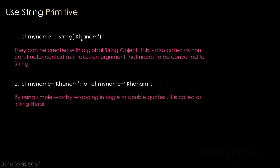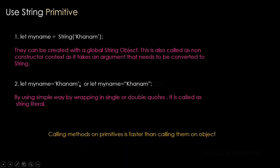There are two ways of creating string primitives — using the String global object or using single/double quotes — but the most preferred is using single or double quotes directly. The reason to prefer string primitives is that calling any method on a primitive is faster than calling it on an object. All the properties and methods available on a string object are also available on string primitives, so it is always better to use string primitives.